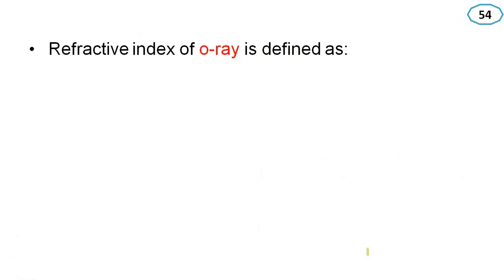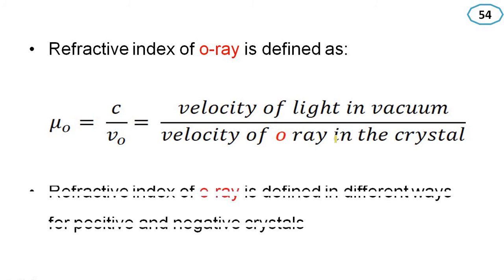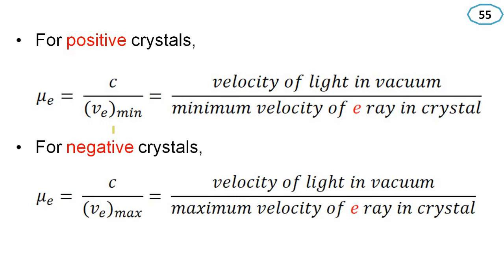The refractive index of the ordinary ray is defined as mu-O equal to C divided by VO, where C represents the velocity of light in vacuum and VO is the velocity of the ordinary ray in the crystal. For the extraordinary ray, there are two different ways to represent the refractive index. For a positive crystal, mu-E equals C divided by VE minimum — that is, velocity of light in vacuum divided by the minimum velocity of the ERA in the crystal. For a negative crystal, mu-E is written as C divided by VE maximum — velocity of light in vacuum divided by the maximum velocity of the ERA in the crystal.